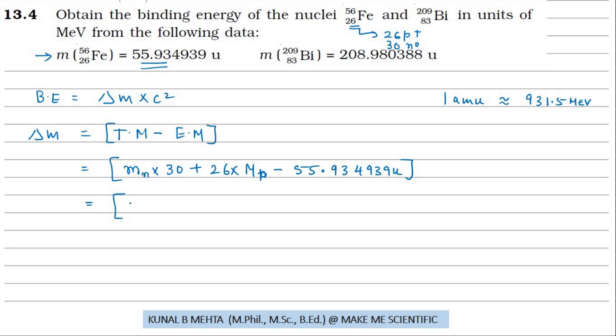Let us substitute those values: 30 times the mass of neutron, 1.008665, plus 26 times the mass of the proton, 1.007825, minus 55.934939. Please make sure not to round off these numbers. Substitute whatever is given because even a very small amount of mass matters here.